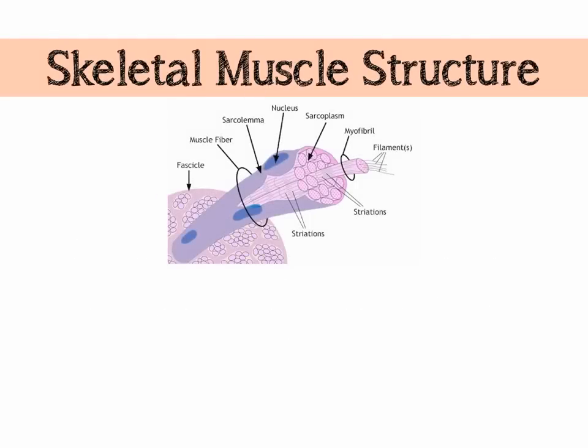Let's start by looking at the structure of skeletal muscle. Skeletal muscle is the muscle that we consciously control. You've got two other types: smooth muscle, which your organs contain to allow things like peristalsis and churning in your stomach, but we don't have conscious control over those. We've also got cardiac muscle, which allows your heart to beat, controlled by the sinoatrial node — the pacemaker of the heart — with a little bit of feedback from the medulla. But skeletal muscle is what we're interested in today.